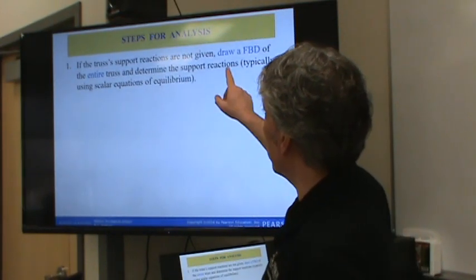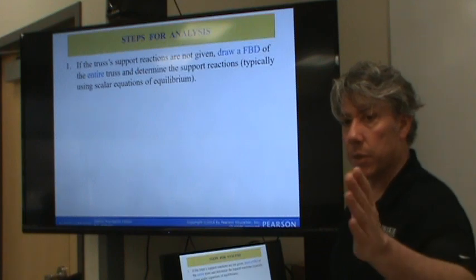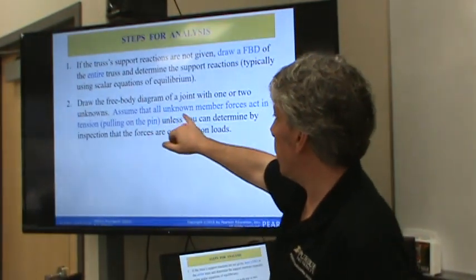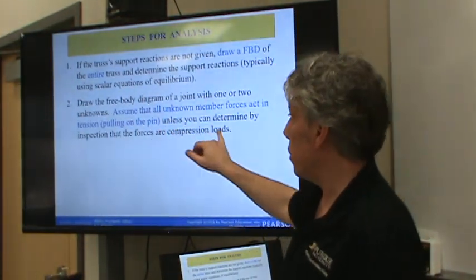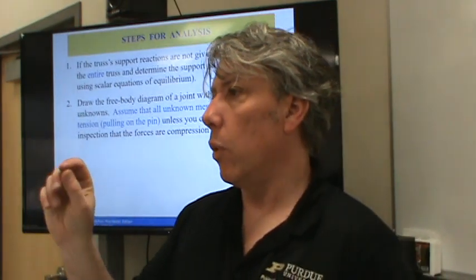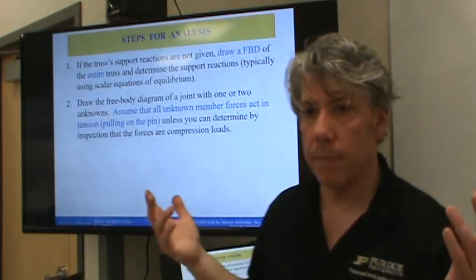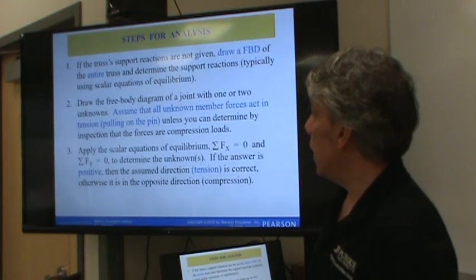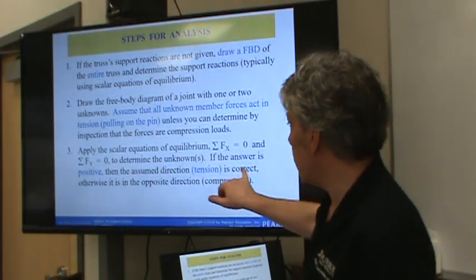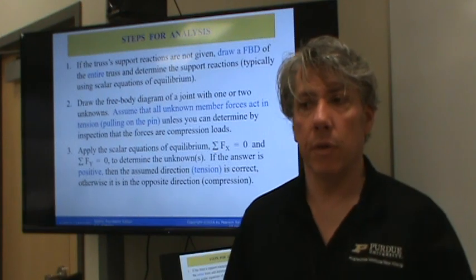Steps for analysis. If the truss support reactions are not given, draw a free body diagram of the entire truss, get the reactions. So use all the equations of equilibrium, the sum of force and sum of moments. Next up, draw a free body diagram of a joint with one or two unknowns. Assume all the unknown member forces act in tension, unless you can determine by inspection that the forces are in compression. So when we draw a point, a joint, what we'll do is assume that all the members connected to that joint are in tension. And if we get a negative force, we know that that member is in compression instead. Apply the scalar equations of equilibrium, the sum of force equations, to determine the unknowns. If the answer is positive, it's tension, we were right. If it's negative, then it's compression. Does it make sense?